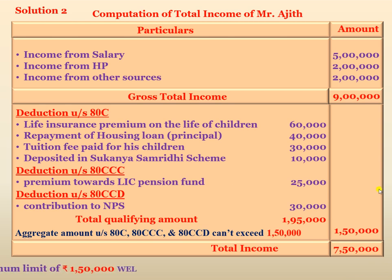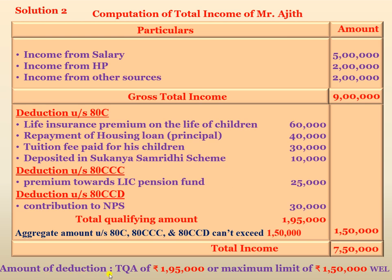The amount of deduction is Rs. 1,95,000 or maximum limit of Rs. 1,50,000, whichever is less. Since the investments total Rs. 1,95,000 but the maximum limit covering these three sections is Rs. 1,50,000, you can only claim up to Rs. 1,50,000 as the combined deduction under Sections 80C, 80CCC, and 80CCD.